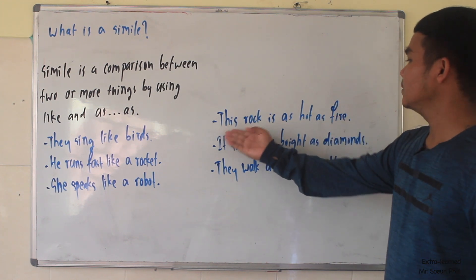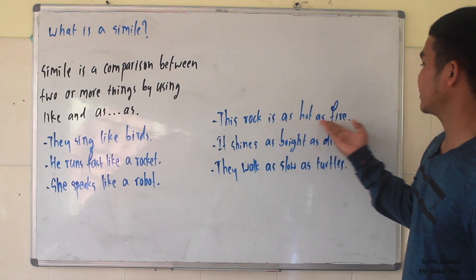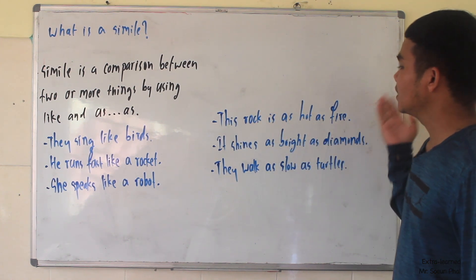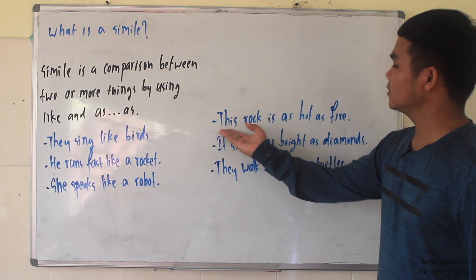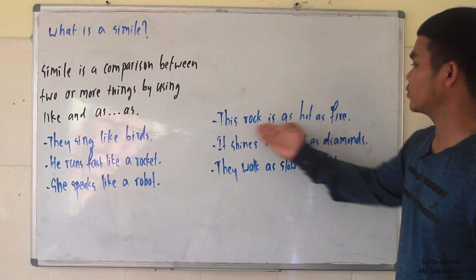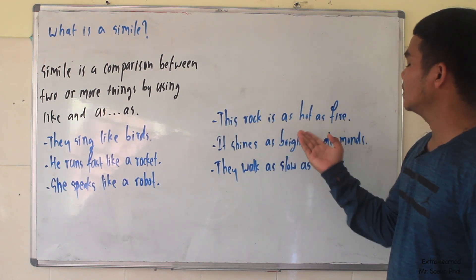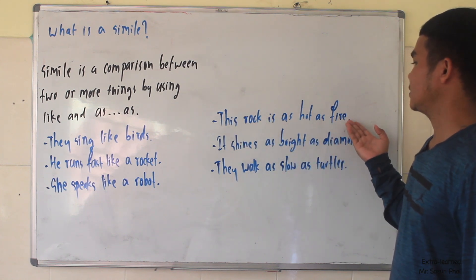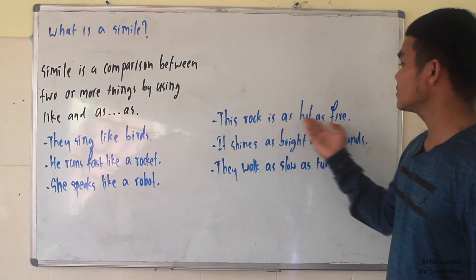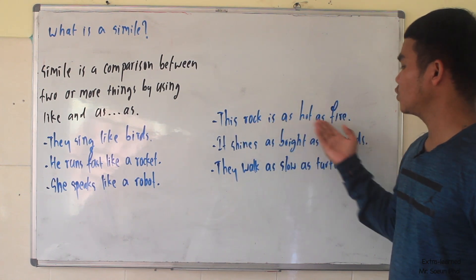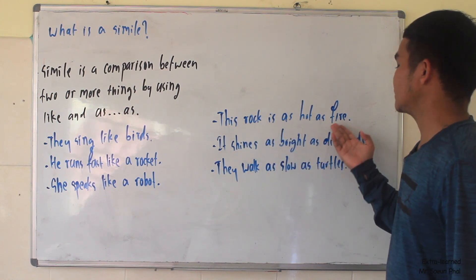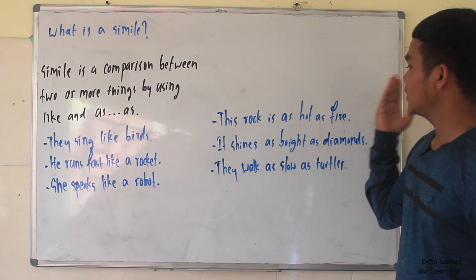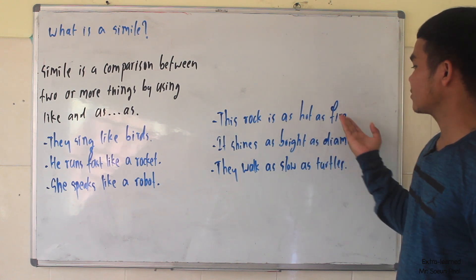Now let's take a look at examples using 'as-as'. For example: 'This rock is as hot as fire.' In this sentence, they compare the rock to fire because the rock is hot. That's why they say 'the rock is as hot as fire.' They use 'as-as' to compare between these two things, so we call it a simile.